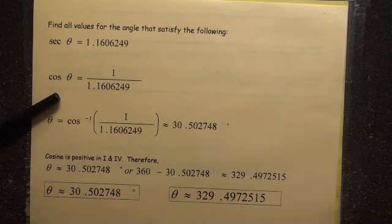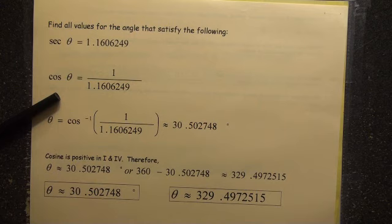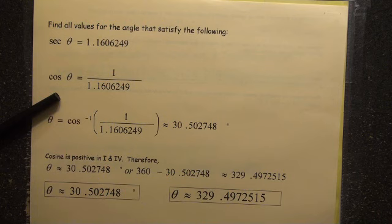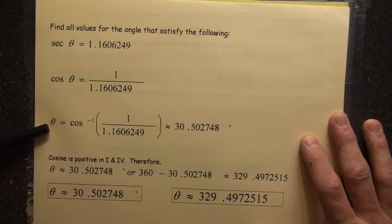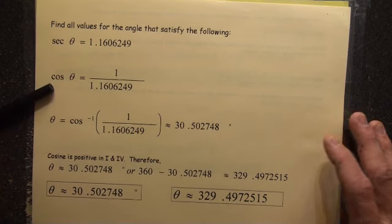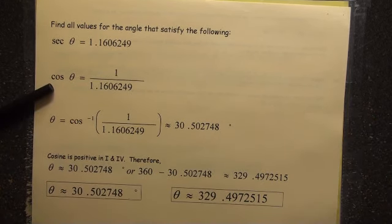This means, of course, cosine of theta equals 1 over that fraction because cosine and secant are co-functions. Then, cosine and secant are inverse functions.